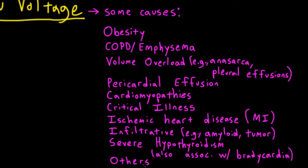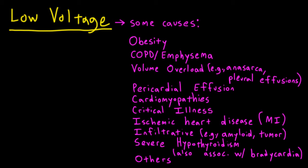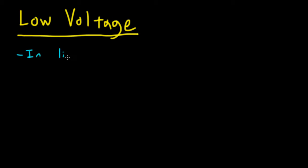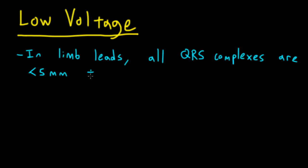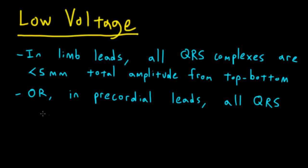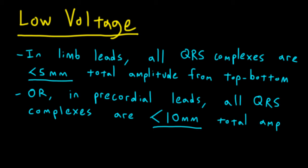There are a number of other things that can produce low voltage on an EKG, but those are some of the more important ones. When reading an EKG, after you scan for each different kind of chamber enlargement, it's fine to just eyeball the tracing as a whole and make sure the QRS complexes don't look overly small. Formal criteria for diagnosing low voltage include: in the limb leads, all QRS complexes smaller than 5 millimeters in total amplitude — measured from the top of the positive deflection to the bottom of the negative deflection. Alternatively, if the QRS complexes are all smaller than 10 millimeters from top to bottom in the precordial leads, you can call it low voltage by precordial lead criteria.